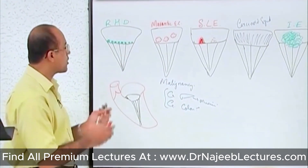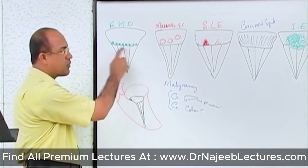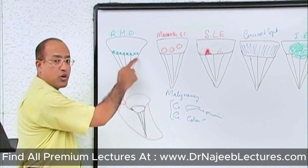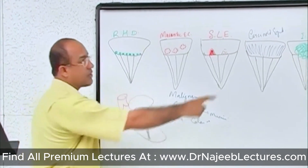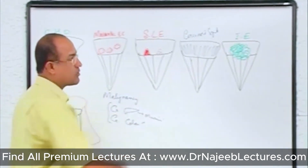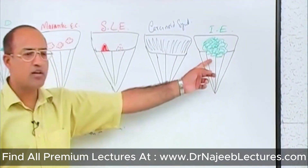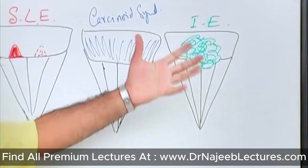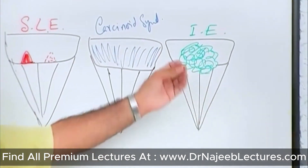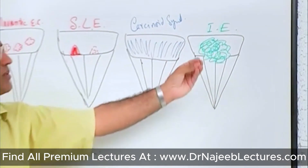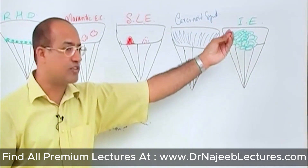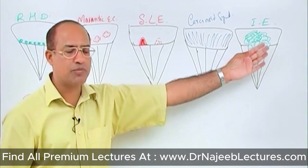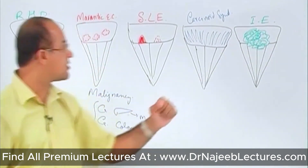Let's compare. Rheumatic heart disease has multiple sterile vegetations that do not detach. Infective endocarditis vegetations may be one or more, but usually they are rapidly growing, they break away, they disintegrate, and they are destructive. They are ulcerative, they are septic, and they can produce septic embolism or metastatic abscesses.